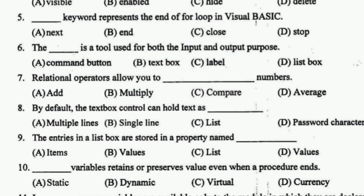The keyword that represents the end of a While loop in Visual Basic is Next. A textbox is a tool used for both input and output purposes. Relational operations allow you to compare numbers. By default, a textbox control can hold text as multiple lines. The entries in a list box are stored in a property named Items.